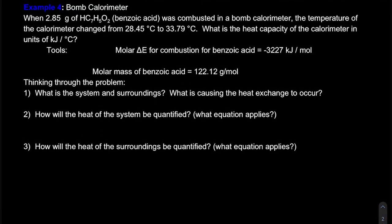Here we have our bomb calorimeter example. We have 2.85 grams of benzoic acid combusted in a bomb calorimeter. The temperature of the calorimeter — which includes the water, the metal, the insulation, and the thermometer, so everything about our calorimeter —